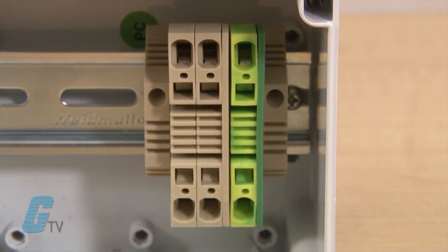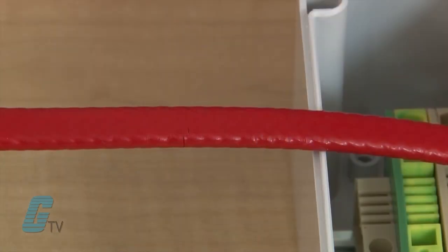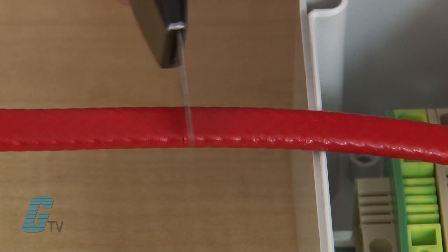Inside the junction box, I have a din rail mountable terminal block that provides a spring terminal connection. I will need to strip the cable to expose the braided wire underneath.